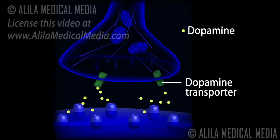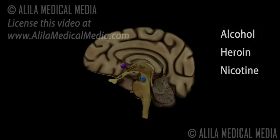Dopamine molecules are then removed from the synaptic space and transported back into the transmitting neuron by a special protein called dopamine transporter. Most drugs of abuse increase the level of dopamine in the reward pathway.